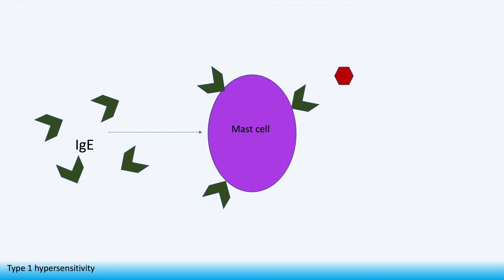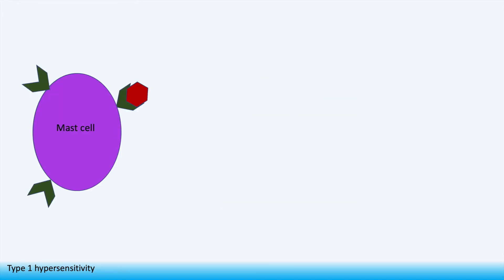Now when a mast cell or any other type of granulocyte for that matter encounters the same antigen it can bind to the IgE antibody and cause the mast cell to degranulate. This is the second part of the process called re-exposure.